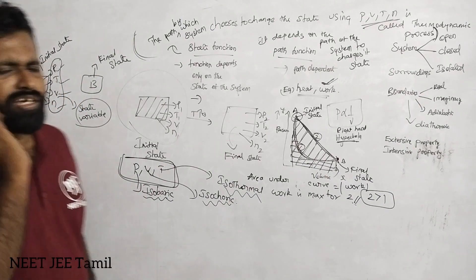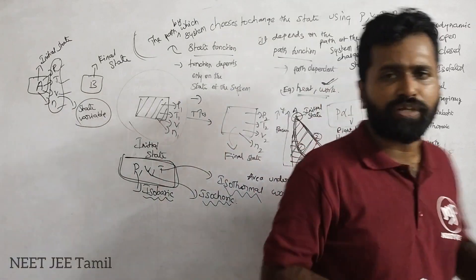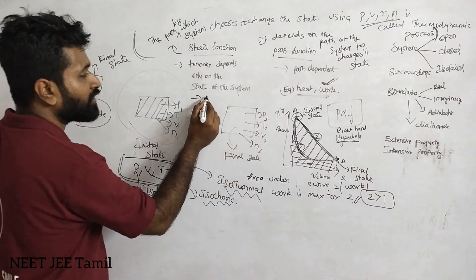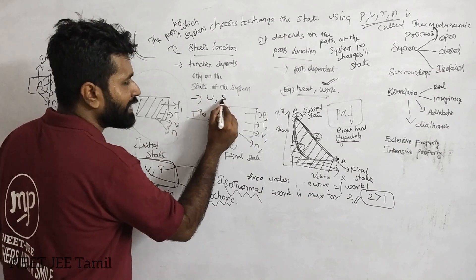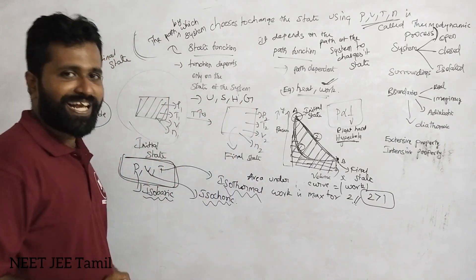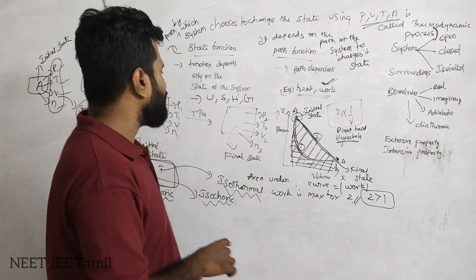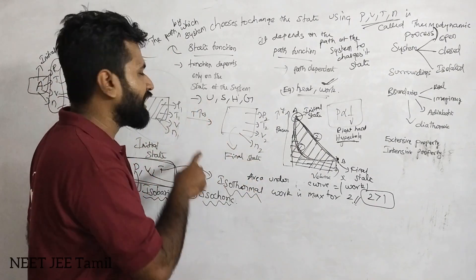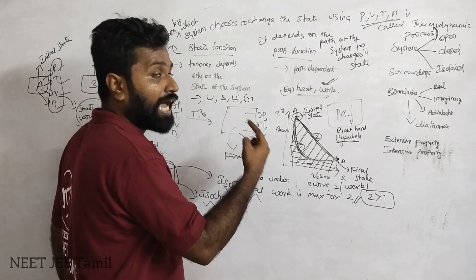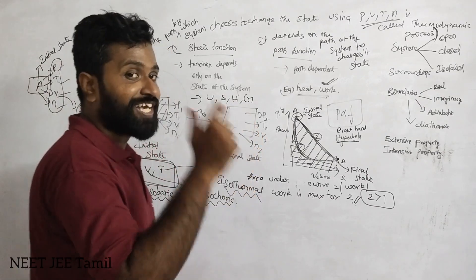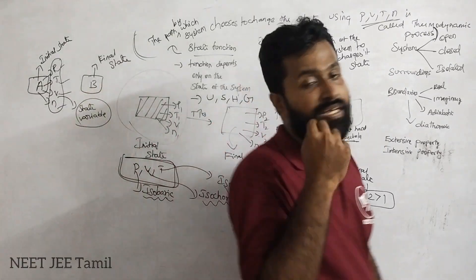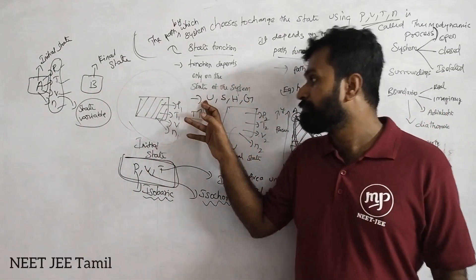You all say path function example, state function example. How do you say? U, S, H, G. I will tell you: U is internal energy, S is entropy, H is enthalpy, G is Gibbs free energy. So this is the important thermodynamic variables, thermodynamic parameters.